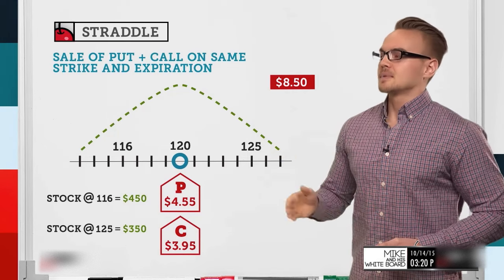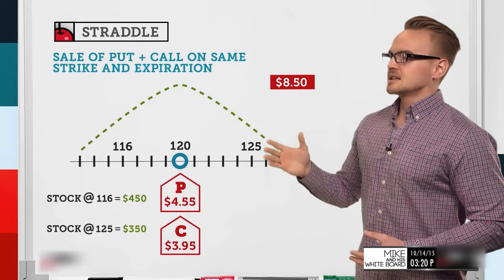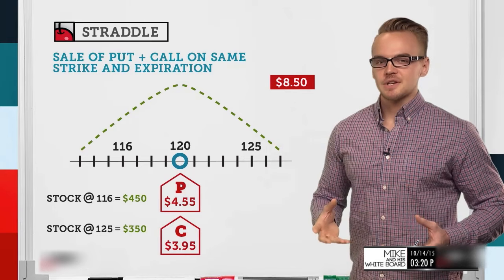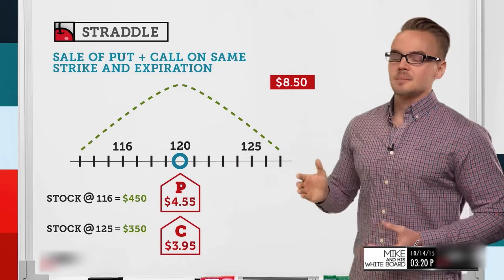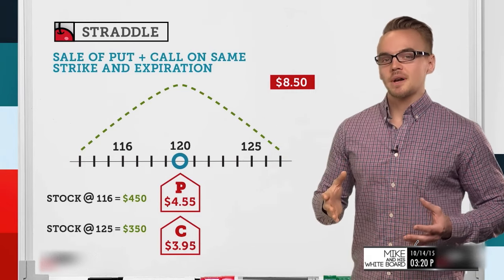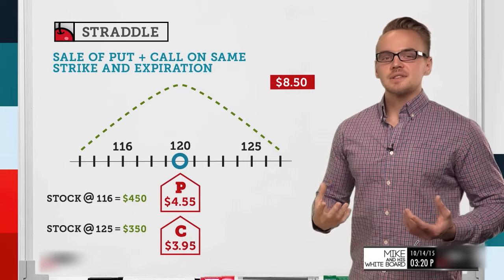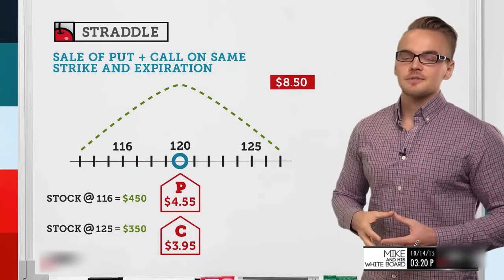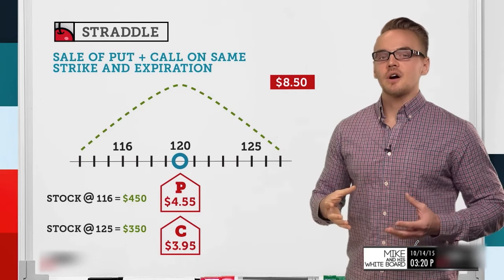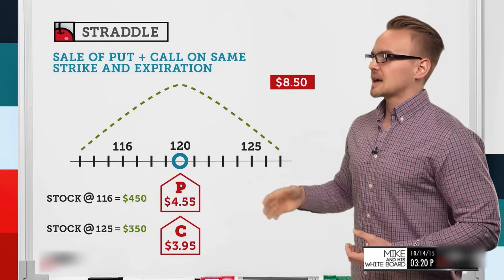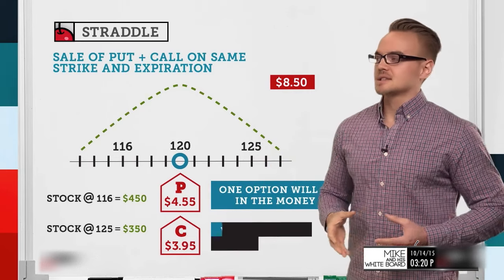Looking at a different example: if the stock is at 125 at expiration, the call is going to be in the money. The stock price is above our 120 strike, so we'd have to buy back that call for $5. Doing the same math — taking the $8.50 credit and subtracting the $5 in-the-money value for the call — gives us a profit of $3.50, or $350.